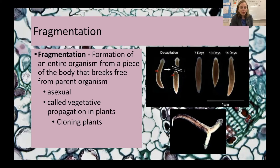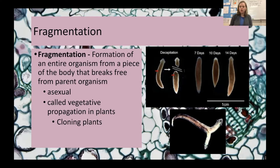In plants, we also have fragmentation, but it's called vegetative propagation — where a piece of the plant breaks off and is cloned. Essentially this is how all banana plants are created. Every banana you eat is a clone of another banana; to get that banana tree, you break a piece off and stick it in the ground.